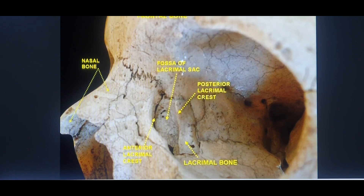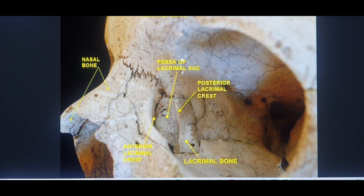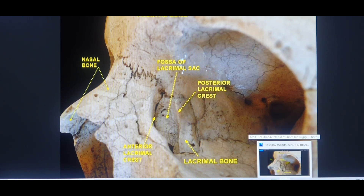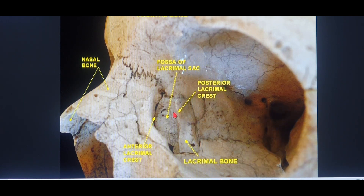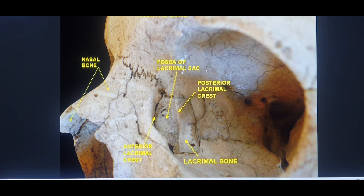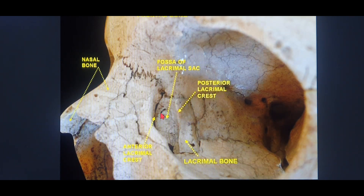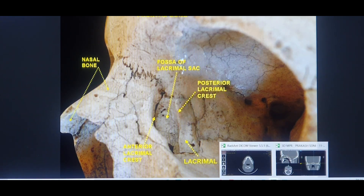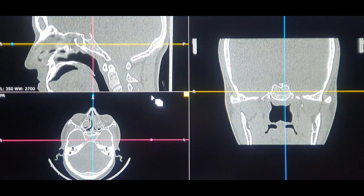If you are a skull base surgeon, ENT surgeon, or radiologist, this is something you have to remember: the Rule of 24, 12, and 6. It is called this because it goes from the anterior to the posterior aspect. I'm going to show you the basic anatomy of this rule, which is concerned with skull base anatomy, and I'll also show you the radiological aspect to make it easy for all of us to understand.